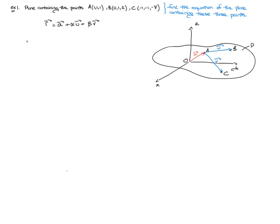The position vector A will equal the position vector of point A, and so that will have coordinates one, one, and one. The vector U, which is contained in the plane, equals the vector AB, which by very definition equals the position vector of point B minus the position vector of point A.